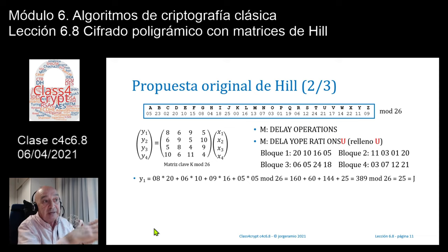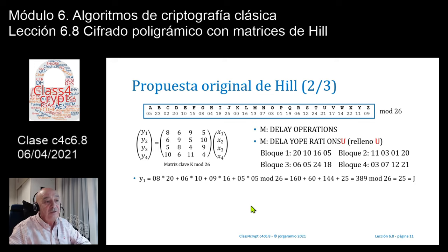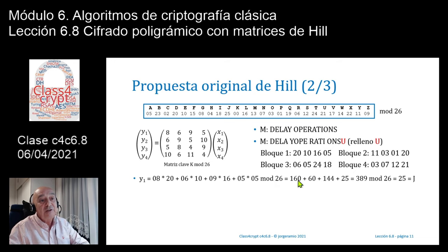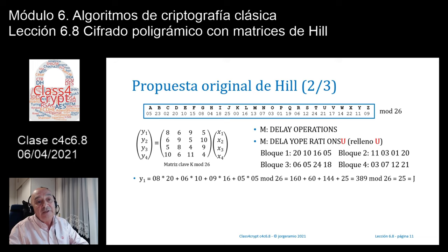A continuación hay que multiplicar filas por columnas: cada fila de la matriz por la columna del texto en claro. Hacemos 8·20 + 6·10 + 9·16 + 5·5 = 389; reducido a módulo 26 da el código 25. Este código 25 en la codificación especial de Hill corresponde a la letra J. Con lo cual Y1 corresponde a la J. Hago lo mismo para Y2, Y3, Y4, lo dejo como ejercicio para comprobar.